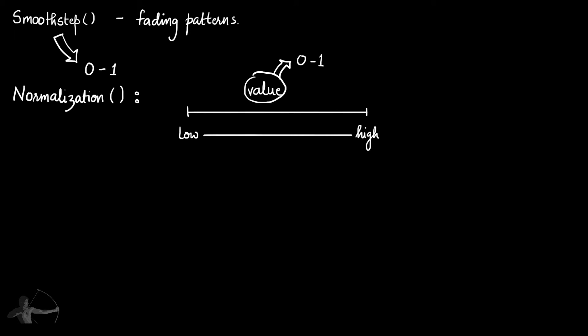Another difference is that the smoothstep function does not give you linear results. The smoothstep function's graph will look like an S-shape, and you can remember it by the letter S, as smoothstep starts with the character S.